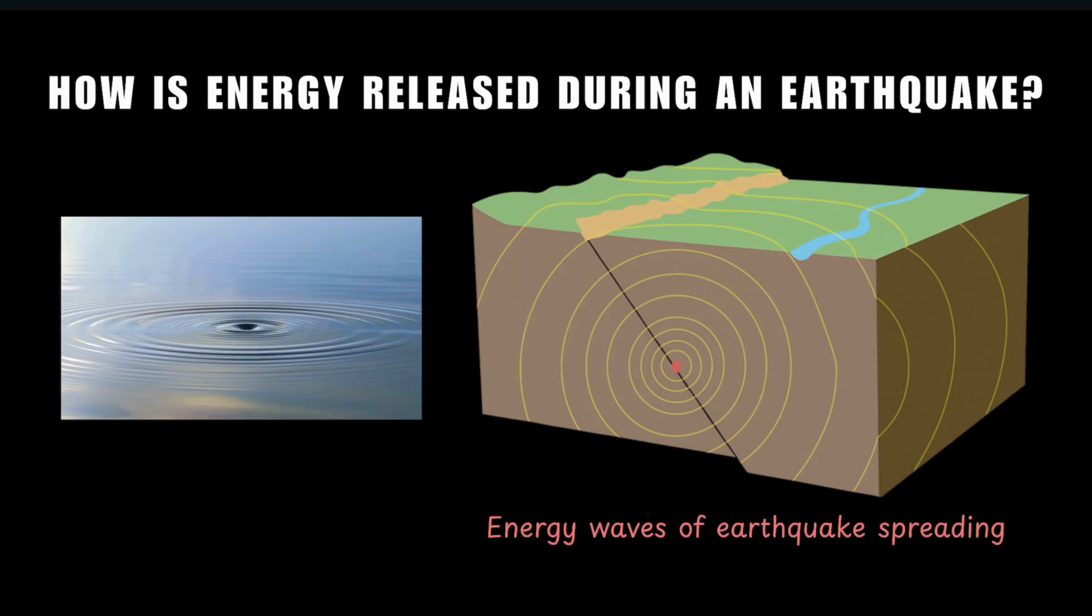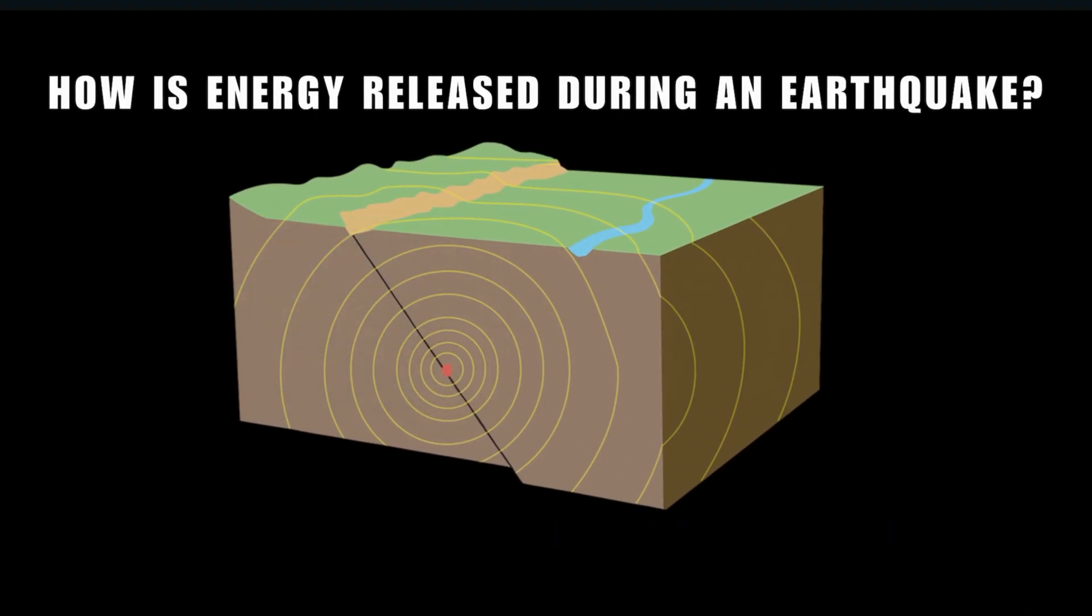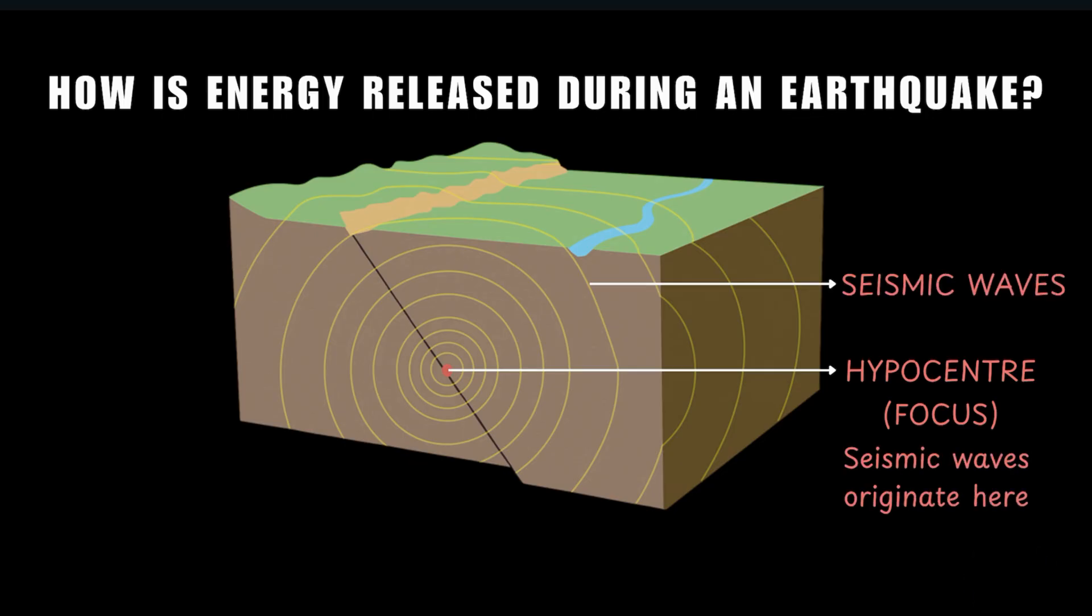I know it's difficult to imagine a similar ripple effect happening in the ground, but it does. And the center of that ripple, the very place you threw the stone at, becomes the center of the earthquake, which we call the hypocenter or the focus. The so-called ripples are called seismic waves. And the hypocenter is where the seismic waves originate.